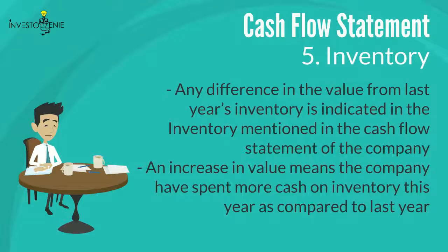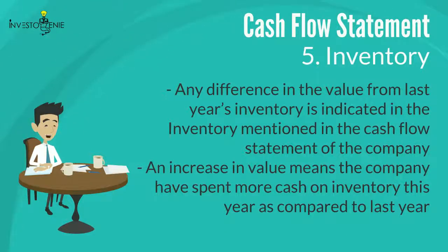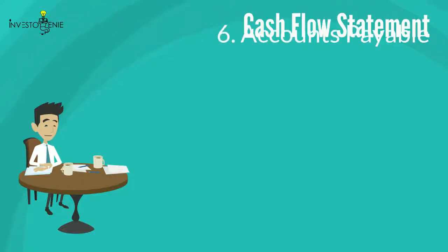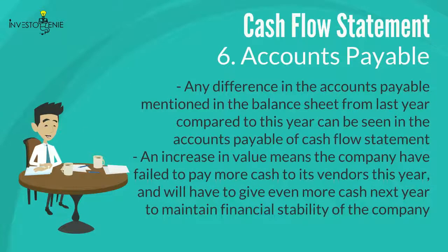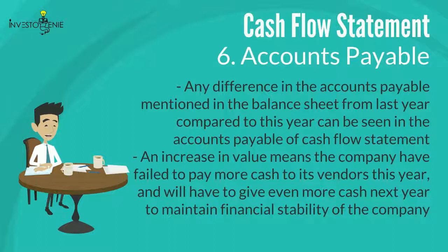Five: inventory. Similar to accounts receivable in the cash flow statement, any difference in inventory value from last year is indicated in the cash flow statement. An increase in value means the company spent more cash on inventory this year compared to last year. Six: accounts payable. Any difference in accounts payable from last year compared to this year can be seen in the cash flow statement. An increase in value means the company failed to pay more cash to its vendors and will have to give even more cash next year.